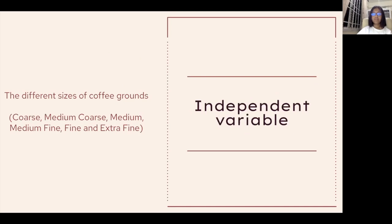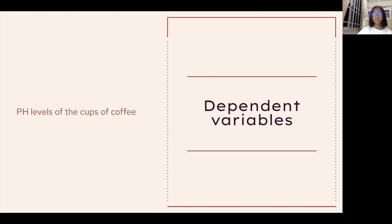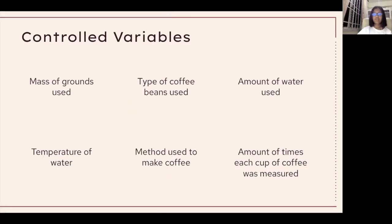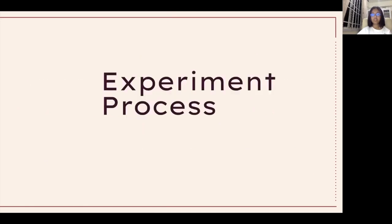Our independent variable is the different sizes of coffee grounds. Our dependent variable is the pH levels of the cups of coffee. Our control variables are the mass of grounds used, type of coffee beans used, amount of water used, temperature of water, method used to make coffee, and the number of times each cup of coffee was measured.